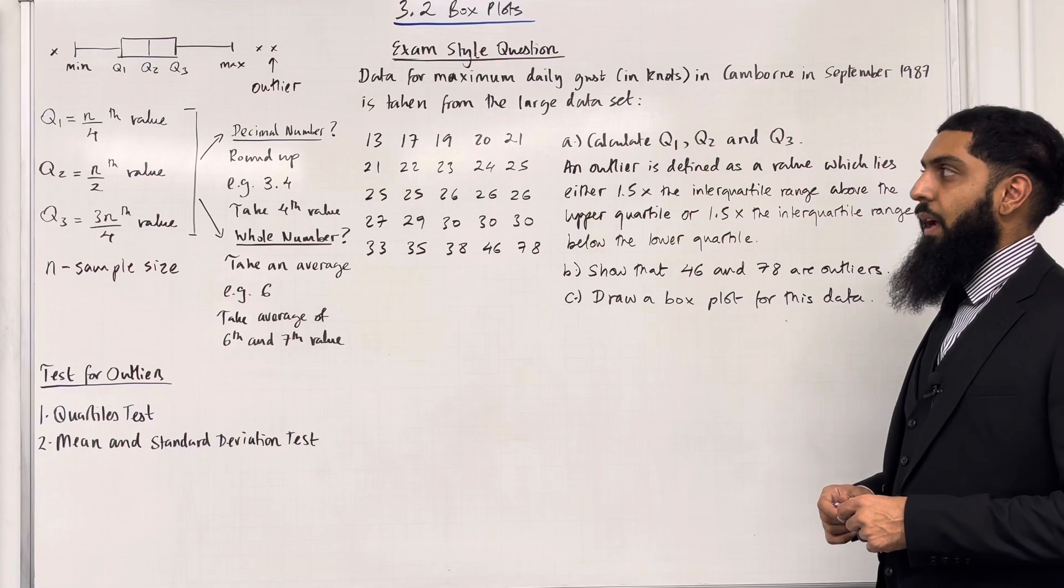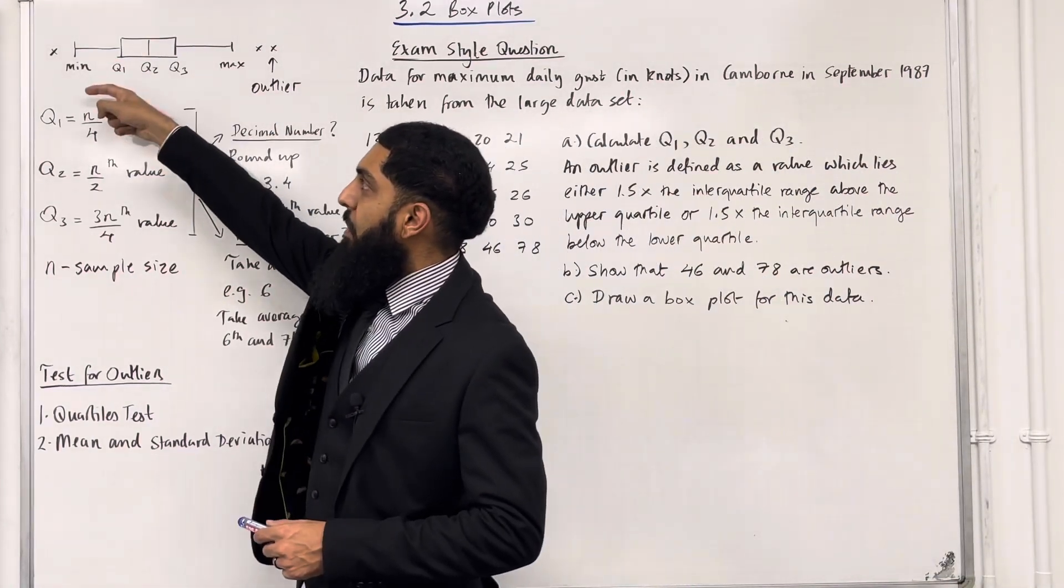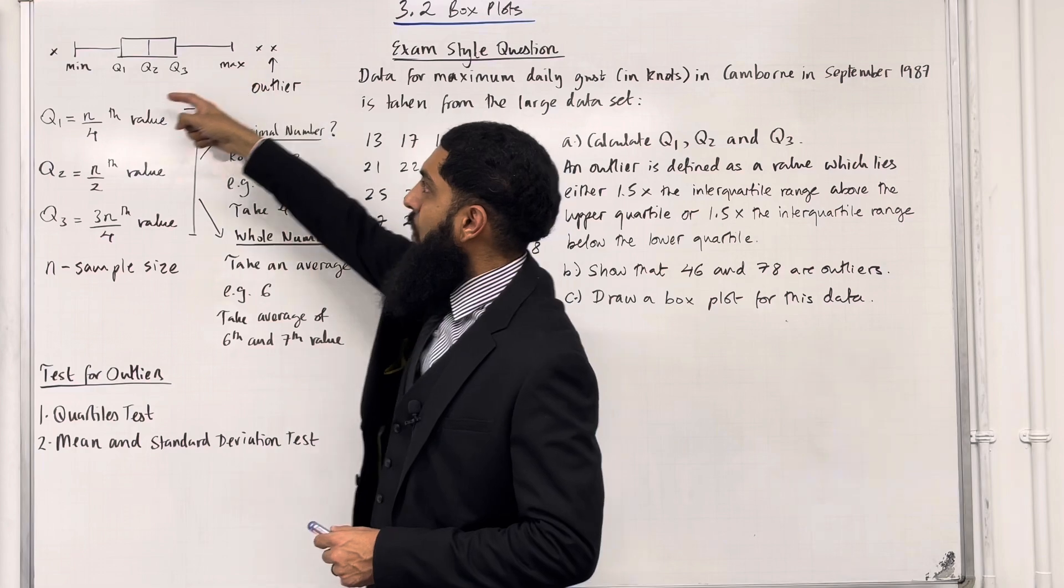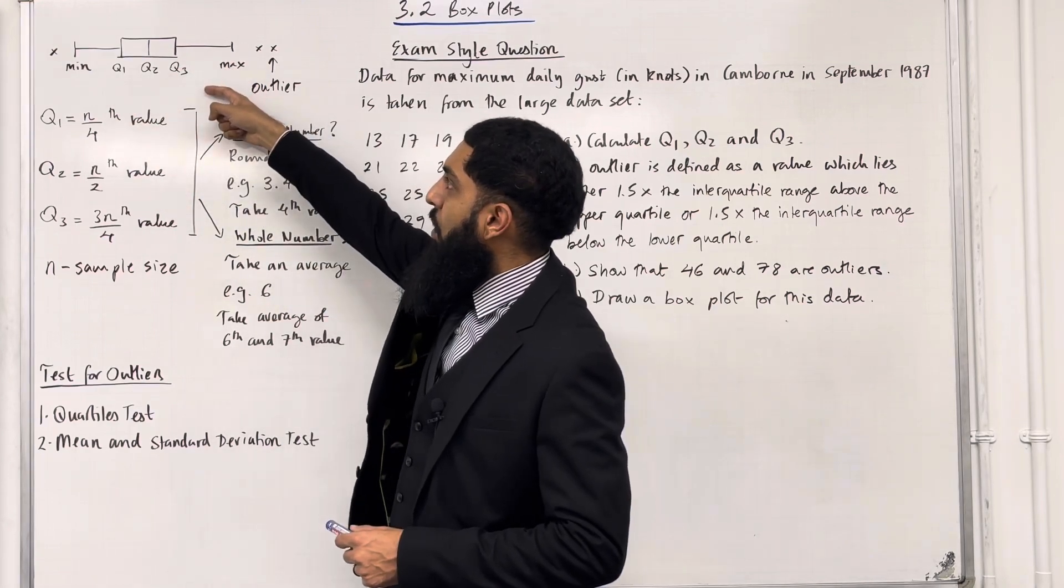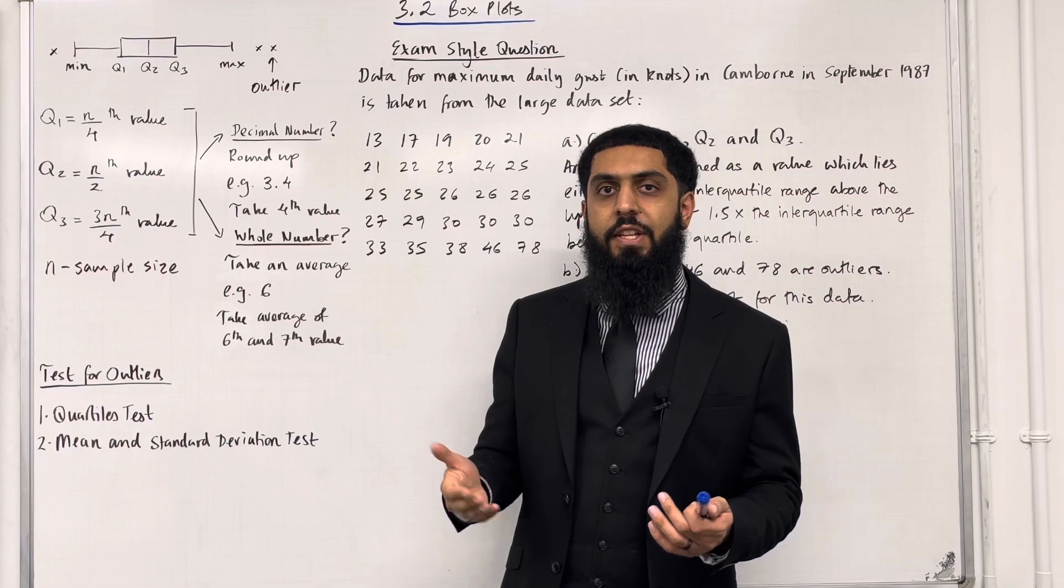Let's go through the key facts of this section. First, what does a box plot look like? Here is a box plot. We've got the minimum value, maximum value, lower quartile, upper quartile, and the median. The outliers are represented by an X.